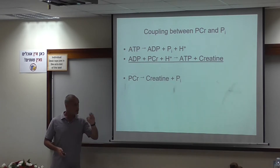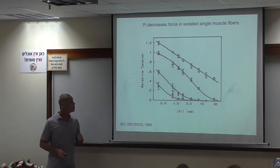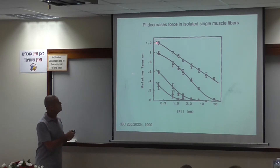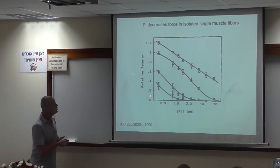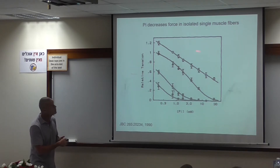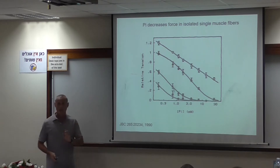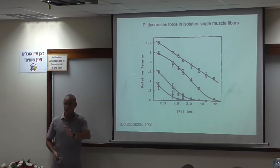Does inorganic phosphate interfere with force generation? We go to our skinned fiber preparation — this is a study by Miller and Holmscher. Force is on the Y-axis, and phosphate concentration is on the X-axis. As we increase the phosphate concentration, we decrease the force generated by the muscle. These experiments were done at different calcium concentrations; the lower the calcium concentration, the less force the muscle generates. But the point is that under every condition, regardless of calcium concentration, inorganic phosphate inhibits force.